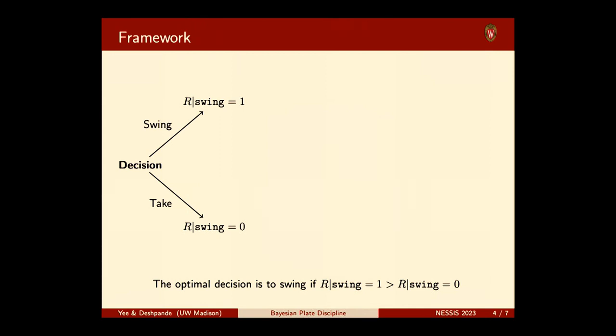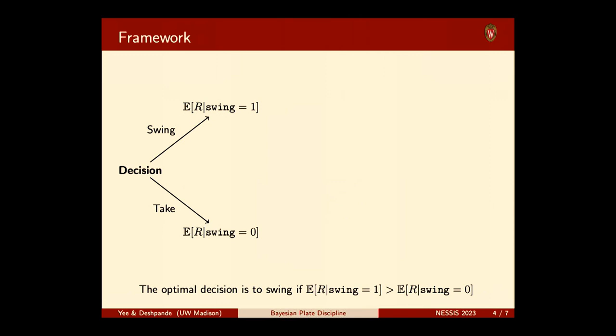Now let's say instead of telling me deterministically, the oracle says: 'Ryan, if you swing, on average you'll score two runs — I've seen a thousand different futures.' And similarly, on average, if you take, you'll score five runs. The logic still holds: I should swing if the average number of runs from swinging is greater than the average number of runs from taking. So I can just replace everything in my framework with expectations.